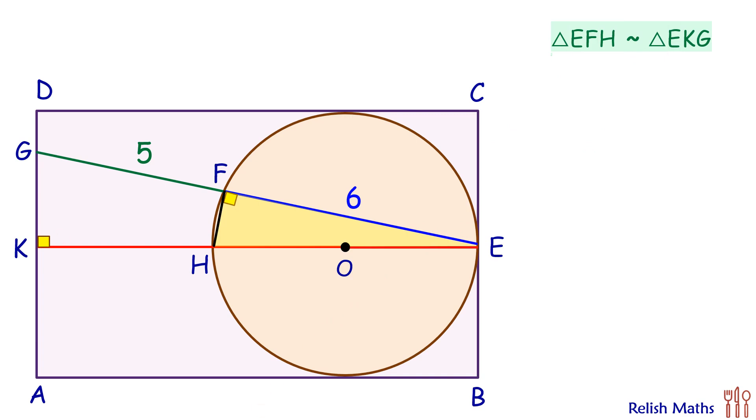So we are taking the ratio of sides: HE upon FE equals GE upon KE. Now, HE is two times the radius, FE is 6 centimeters, GE is 11 centimeters, and KE is the length of the rectangle. Putting these values: 2R upon 6 equals 11 upon L. Cross multiplying, we get L times 2R equals 66.